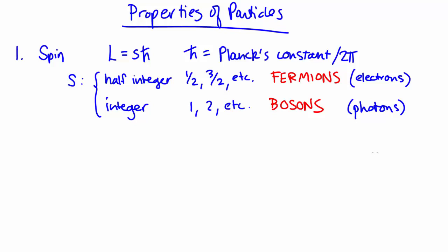Bosons are integer spin. The reason spin is important is that there is a particular principle that applies only to fermions and not to bosons, and that principle is the Pauli exclusion principle.